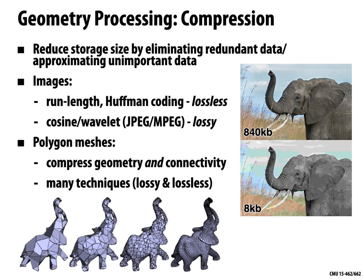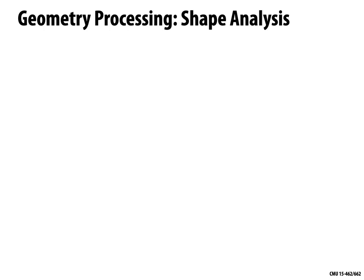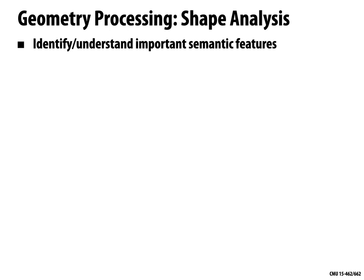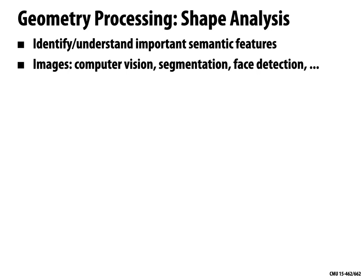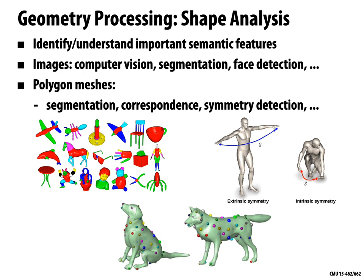Once we have basic operations like upsampling, downsampling, and filtering, we can build higher-level algorithms like shape analysis. Given a model as a long list of vertex coordinates and connectivity, how would you get the computer to automatically decide this is a mesh of an elephant or a human? With polygon meshes, you might take a raw list of polygons and break it into meaningful pieces — identifying, for instance, that these polygons correspond to the legs of a chair versus the back. This is a really interesting challenge.